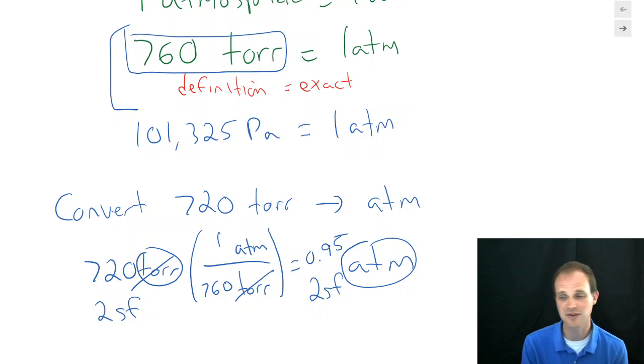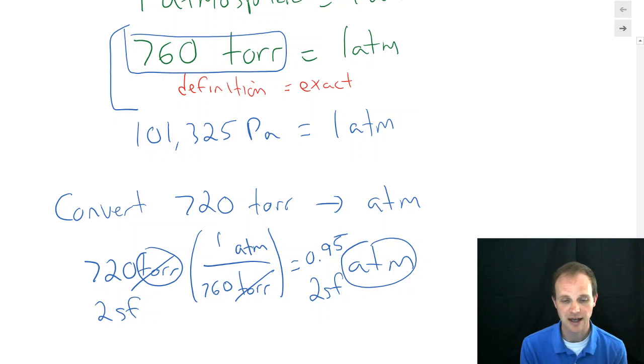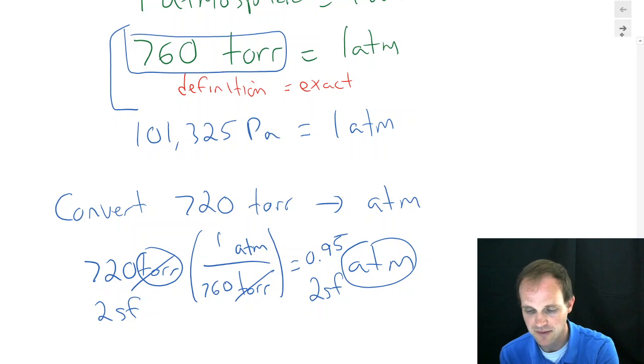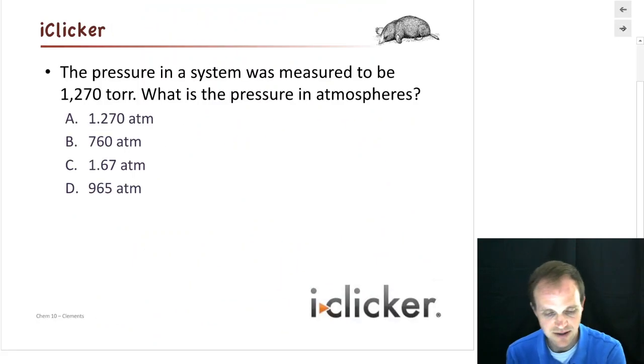So that's how we do conversion between atmospheres and Torrs. And you should definitely know how to do that because we're going to see that in problems. Sometimes I might give you pressure in atmosphere, pressure in Torrs, and you're going to need to convert between them to be able to work with them. All right. So those are our pressure and pressure, volume, and temperature units that we most commonly use.